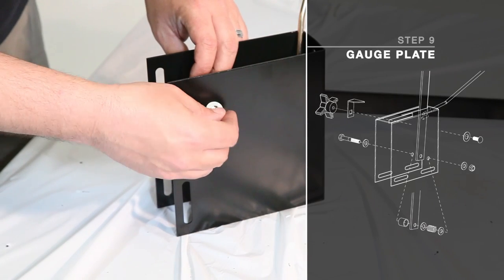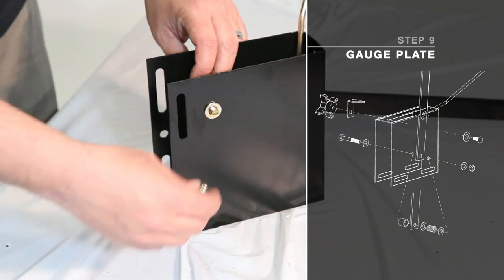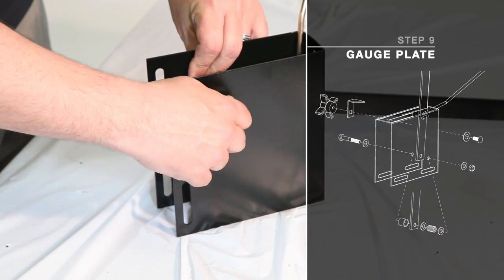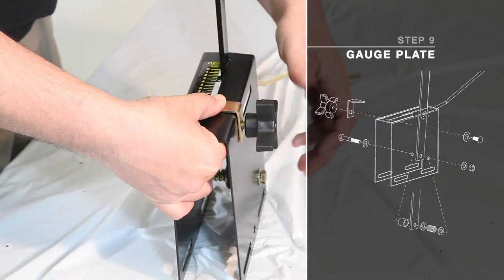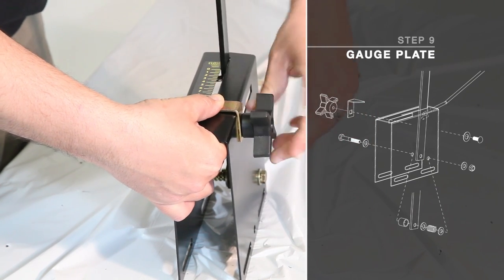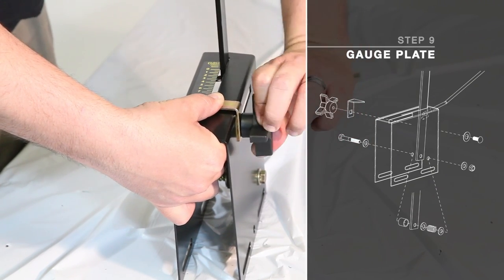Then slide flat washer number 32 through hex bolt and secure to gauge plate using one hex nut number 15. Attach handle stop and knob using one carriage bolt and one curved washer.